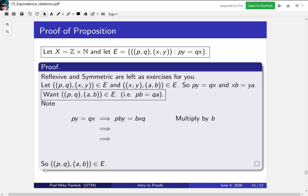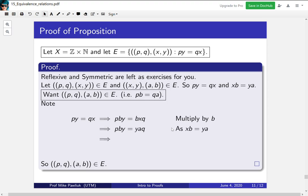So here I've written down the formatting a little bit. Here's our starting assumption. Here's what we want. Now the first thing we do is we multiply by b. So this equality tells us this equality, and now this one right here, we have this xb equals ya, so we can replace the bx part. Now we have pby equals yaq. Now we're thoroughly lost.